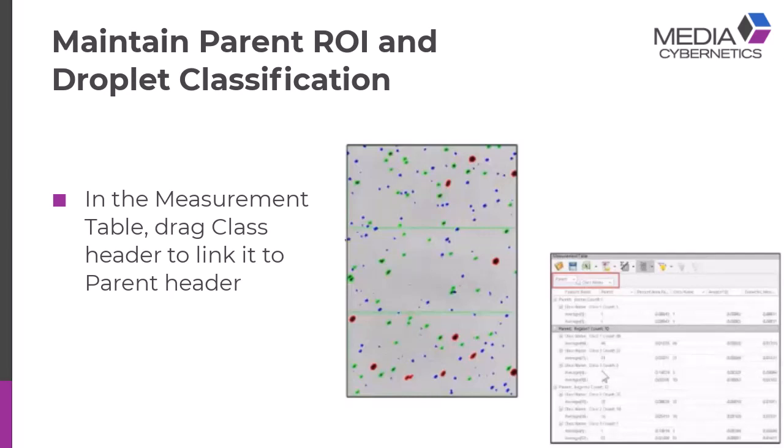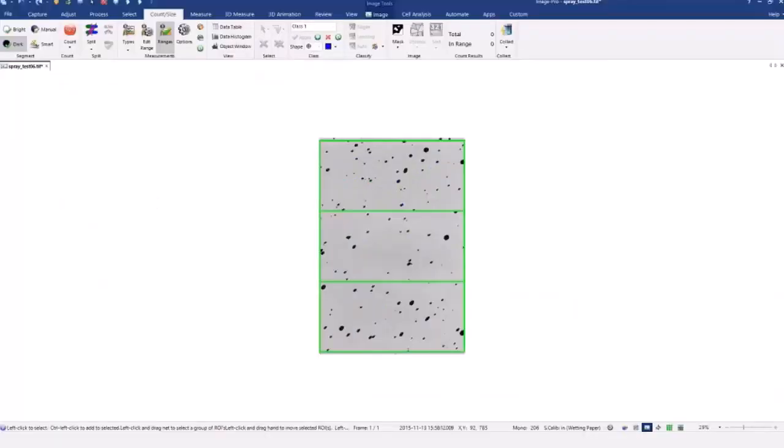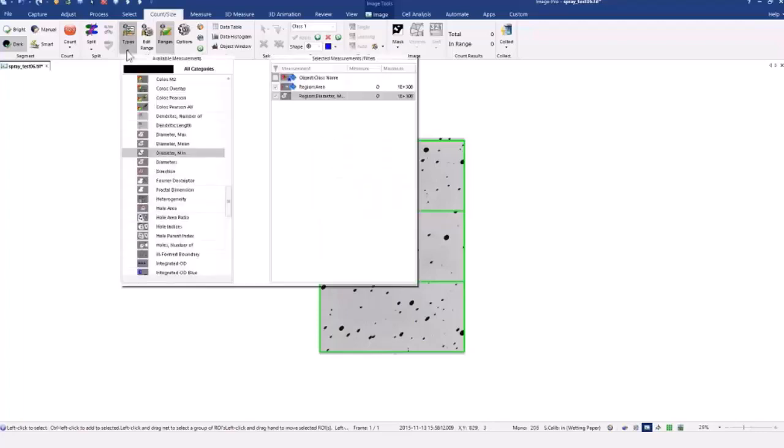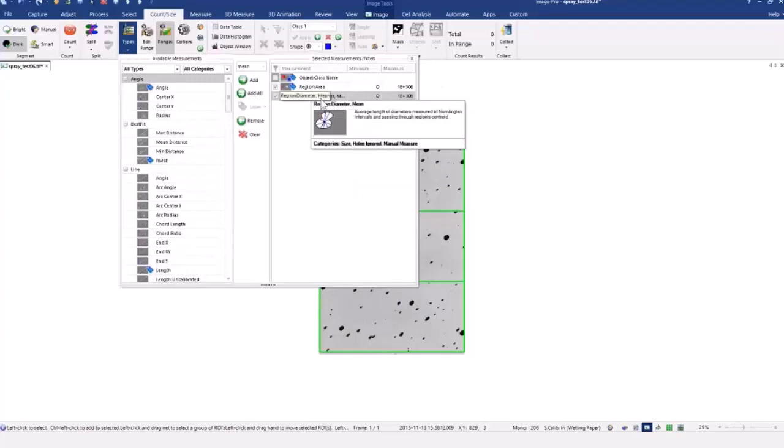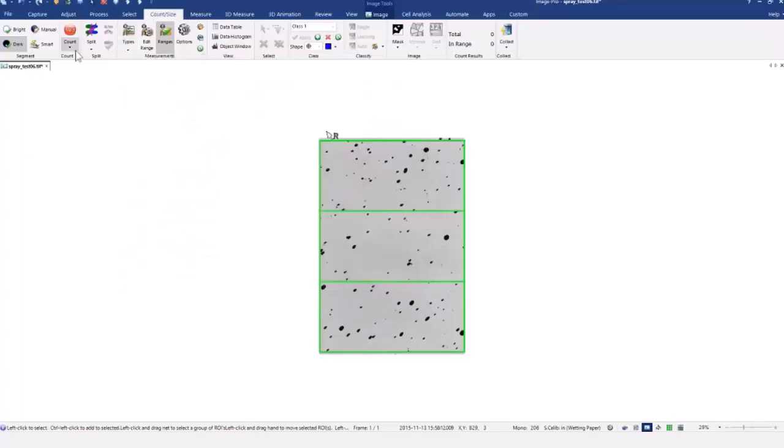So let me just go through a real quick example here. And let me go to ImagePro. So here's my wetting paper, approximately two inches by three inches. I created some ROIs, so I wanted to do a distribution analysis and cover the majority of the paper. Measurement types. I had my object class name, area, and took mean diameter. So I'm just going to do an auto-dark. It's appropriate.